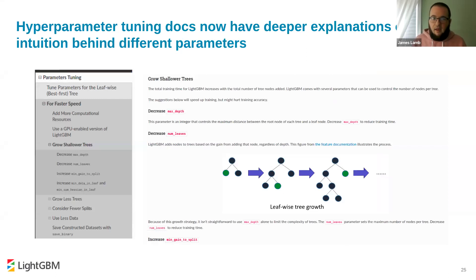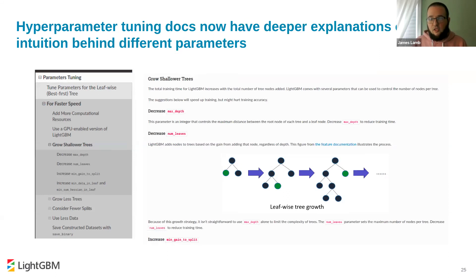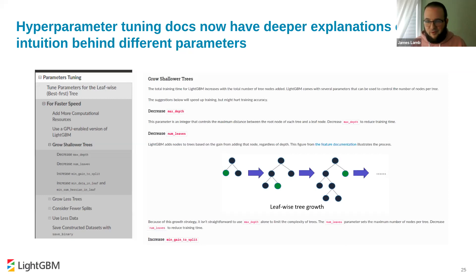We've added an expanded document on hyperparameter tuning, still in progress. We've tried to give more intuition around different hyperparameter values and how they interact. Before this, most documentation assumed a lot of prior knowledge about LightGBM and gradient boosted decision trees. The new descriptions have more depth for people not familiar with the internals. Please check that out in the official LightGBM documentation and submit pull requests if you find issues.